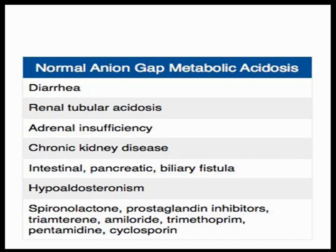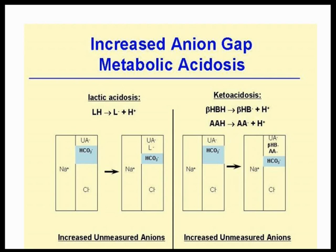For normal anion gap metabolic acidosis, consider causes like diarrhea, renal tubular acidosis, and adrenal insufficiency. Importantly, chronic kidney disease causes normal anion gap metabolic acidosis, whereas acute kidney injury and renal failure cause high anion gap metabolic acidosis due to uremia.